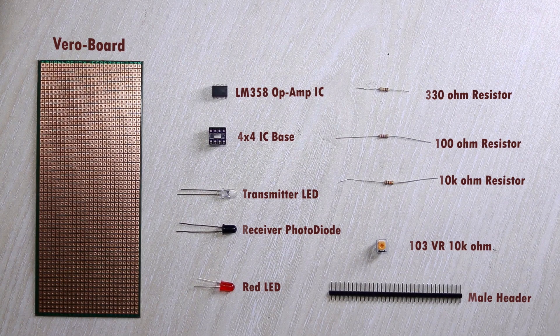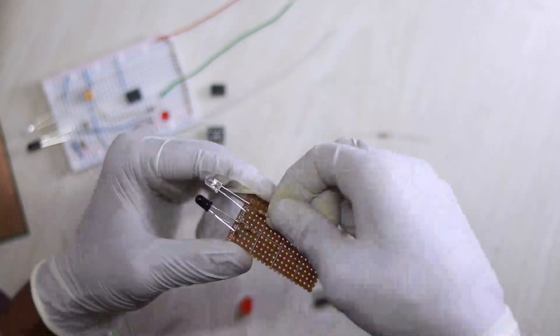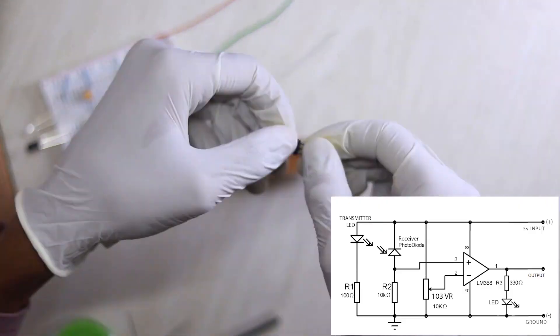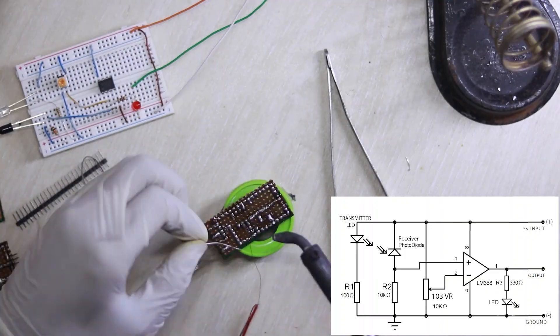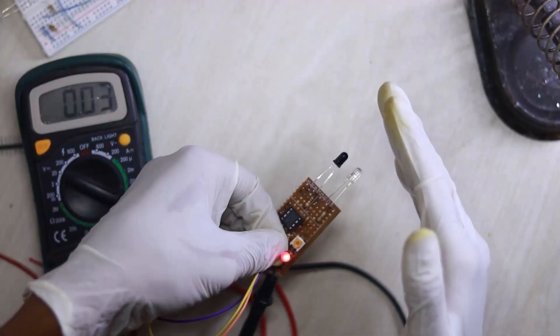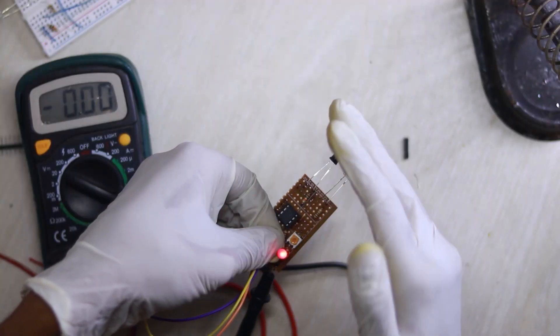Let's start making this. This is the IR sensor module circuit diagram. I simply connected all components with the soldering iron. As you can see, it works well. When it gets an obstacle, the output voltage is around 3.5 volts.